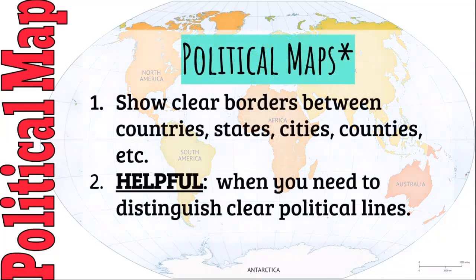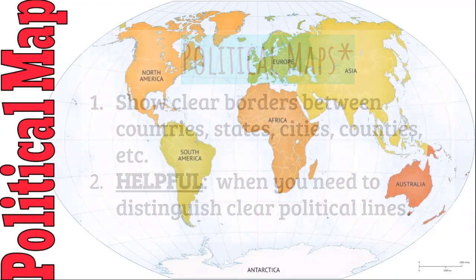Political maps show clear borders between countries, states, cities, counties, etc. There are many different types of political maps depending on whether you're looking at a wide world view or a closer look with different cities or states labeled. They show specific boundaries mainly because the color is changing. This is helpful when you need to distinguish clear political lines — if you don't see them, you might start a war. Not cool.